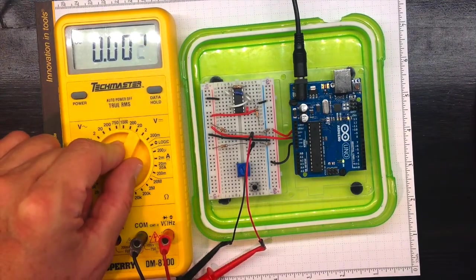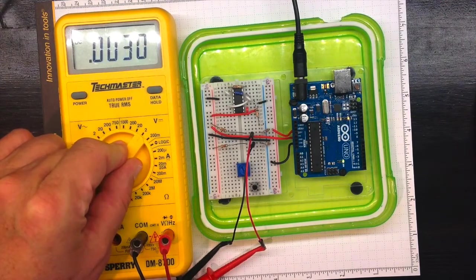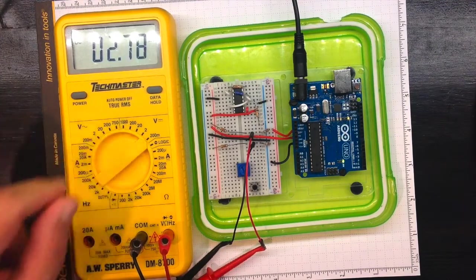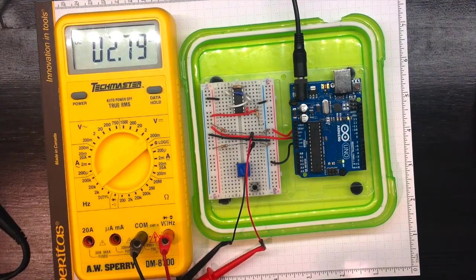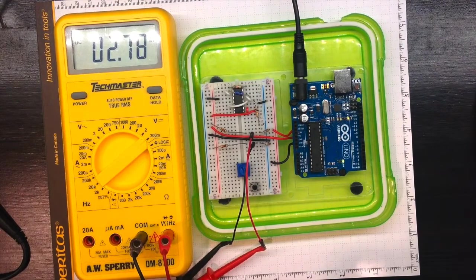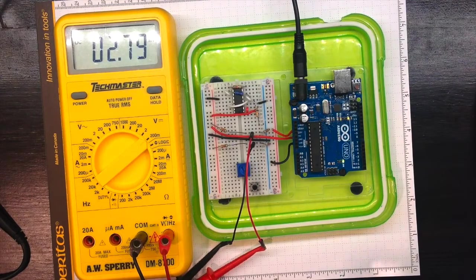If we wanted to know what that was a little better, we could switch down to the 2 volt scale, or even the 200 millivolt scale. And now we can see that it's about 2.8 millivolts is the difference between those two.